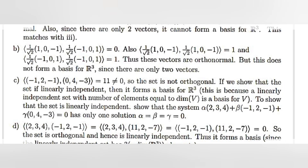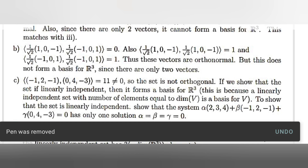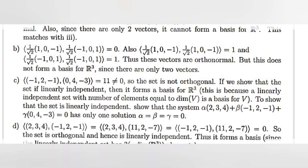Set B: the inner product of (1/√2, 1, 0, -1) and (1/√2, -1, 0, 1) equals 0, so they are orthogonal. Also, the inner product of each vector with itself equals 1, so these vectors are orthonormal. However, this does not form a basis of R3 since there are only two vectors — three vectors are needed for a basis of R3.